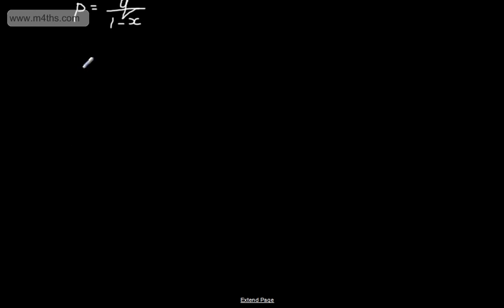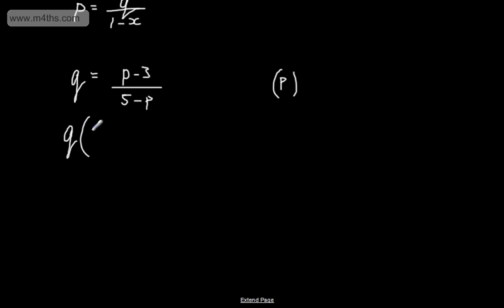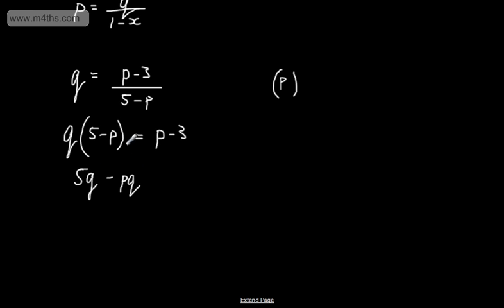Let's look at another one. Let's say we've got q = (p - 3) / (5 - p), and we want to make p the subject. We can see that p appears in both the numerator and the denominator. So what I'm going to do is multiply both sides of the equation by the denominator, which gives q(5 - p) = p - 3. I want to collect the p's on one side, so I'll expand the brackets to get 5q - pq = p - 3.